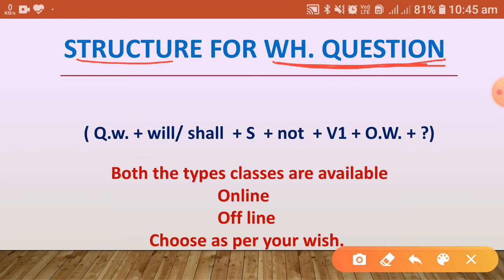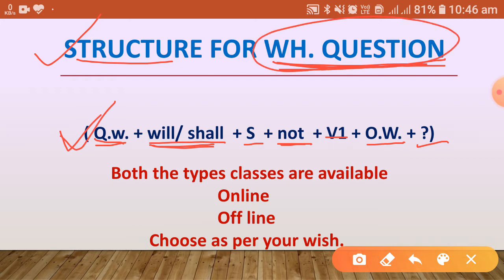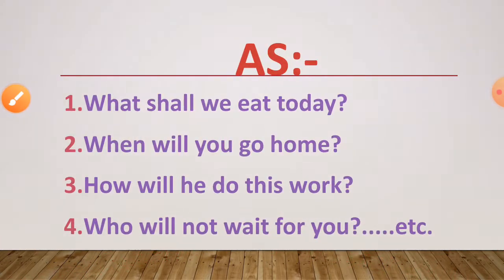A WH question is a sentence which starts with a question word and cannot be answered by yes or no. The structure for WH questions is: Question Word + Helping Verb (will/shall) + Subject + (not, if applicable) + First Form + Other Words + Question Mark.